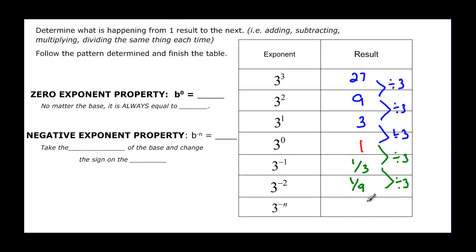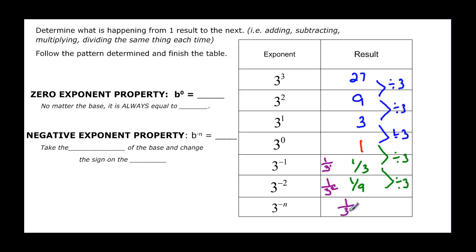So when I look at this, I have 3 to the negative n. 3 to the negative 1 was 1 over 3 to the first. 3 to the negative 2 — we could say that this is 1 over 3 squared. So if I have 3 to the negative n, it should be 1 over 3 to the n.